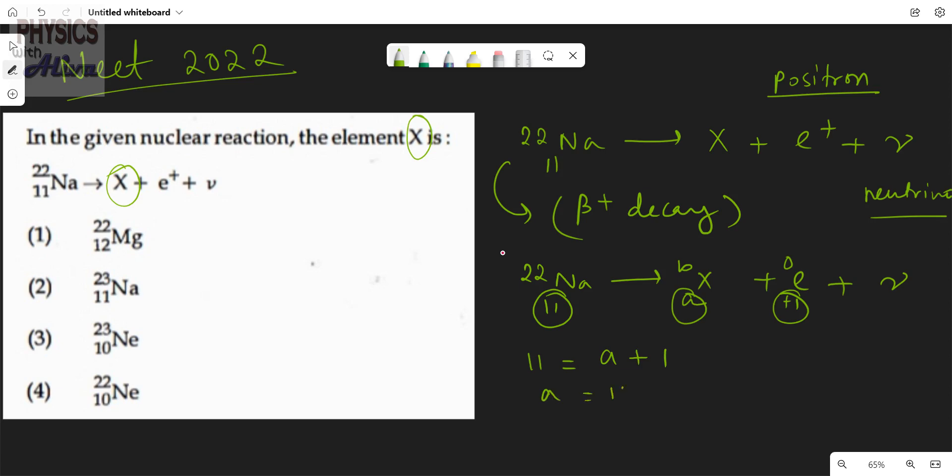And from the upper portion we can write conservation of atomic mass: 22 is equals to b plus 0, so b is equals to 22. So the atomic number, the mass number of the element X is 22 and the proton number or the atomic number of the element X is 10.